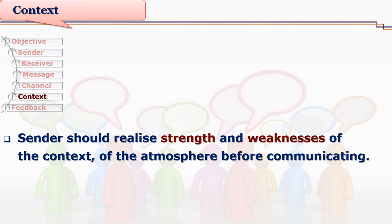Context is very important, and every sender plays a major role in this. The sender needs to realize the strengths and weaknesses of the context before communicating. The context itself may create many hindrances, difficulties, and obstacles. A simple example: if there is a lot of noise outside, students cannot focus in the classroom, and the teacher gets disturbed while teaching. Teacher as a sender needs to understand strengths and weaknesses of the context — fixed furniture can prove a weakness, while loose chairs may prove a strength if the teacher wants to conduct group activities.